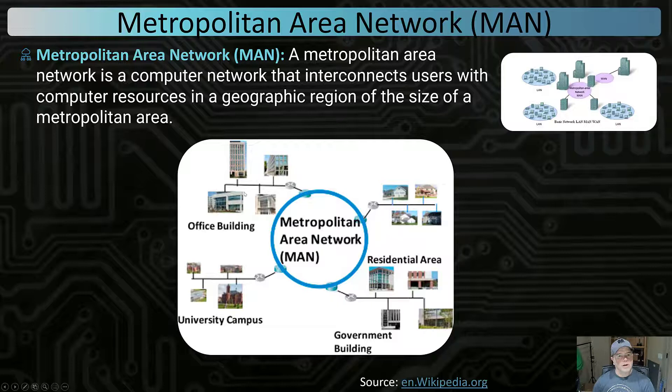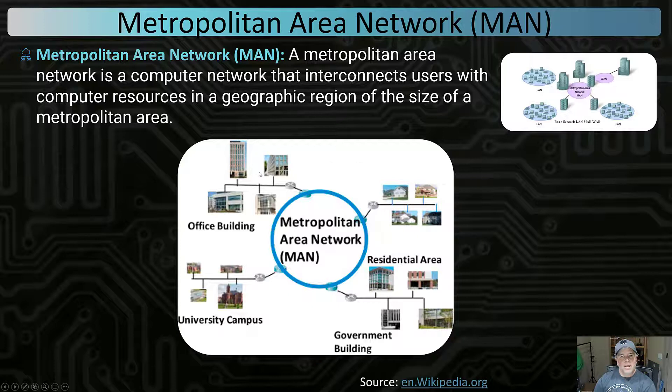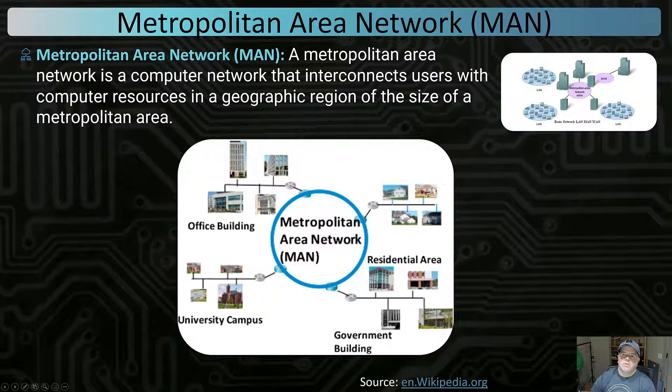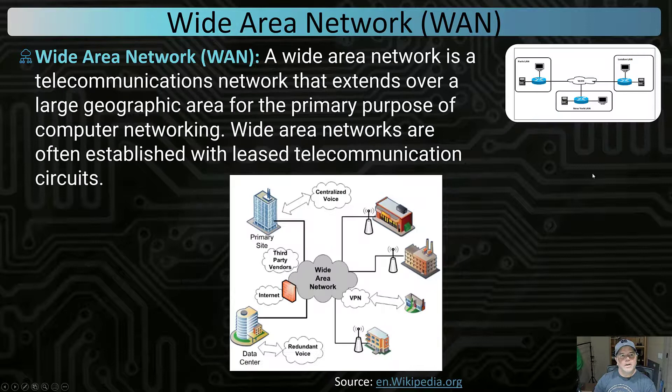As we grow the network, we might take many local area networks and combine them into a metropolitan area network. Google has offered metropolitan Wi-Fi in certain cities, creating a Wi-Fi network over an entire city. By doing this, an office building could connect to a campus, which connects to government. We don't see many of these because today we want security and segmentation, but it shows how many LANs can connect in a larger geographic area.